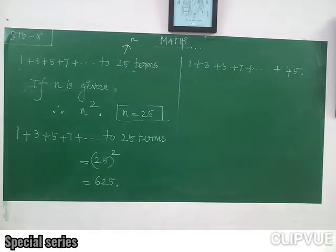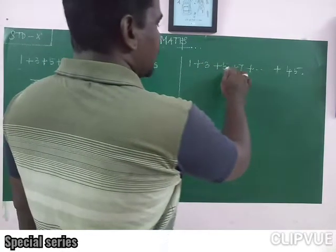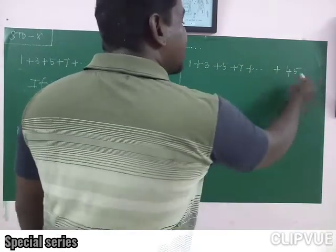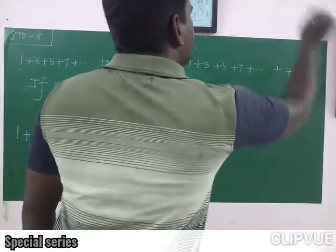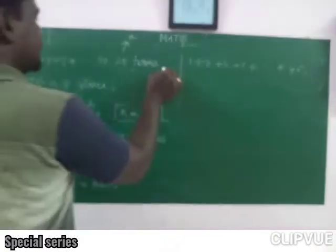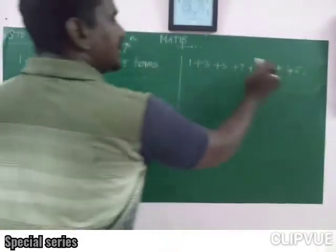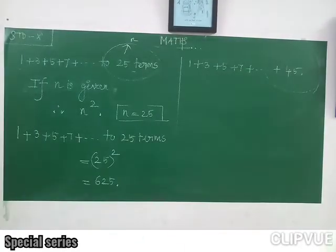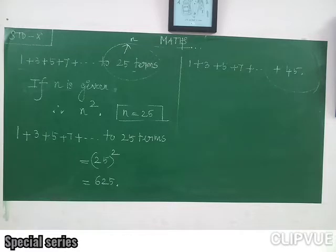Listen, the second one: 1 plus 3 plus 5 plus 7 plus and so on plus 45. See the difference — here 25 terms, here plus 45. What is the difference? Here, plus 45 is the last term of the second series. And 25 terms means the series contains 25 terms. This is the major difference.